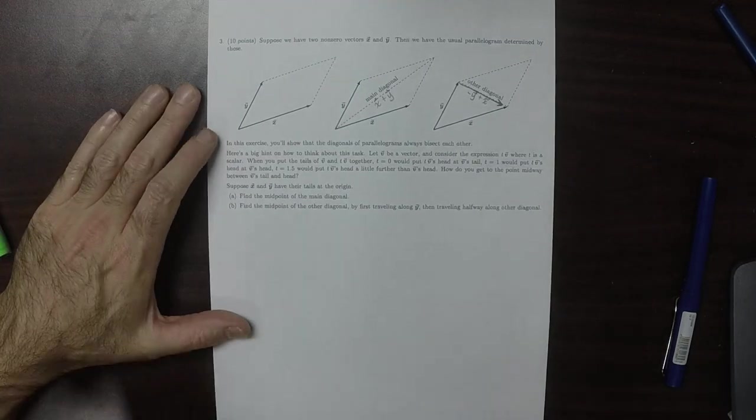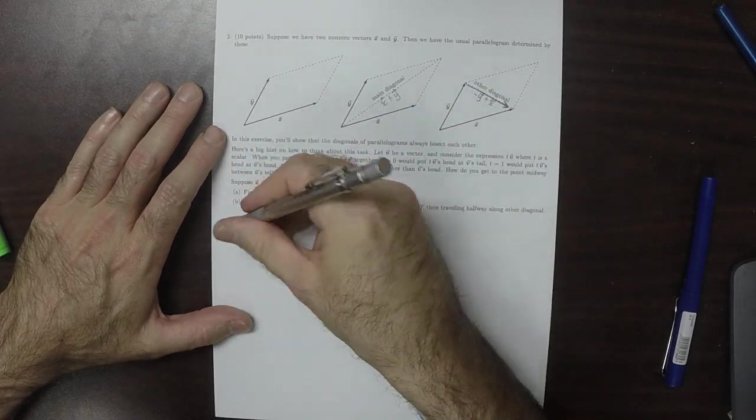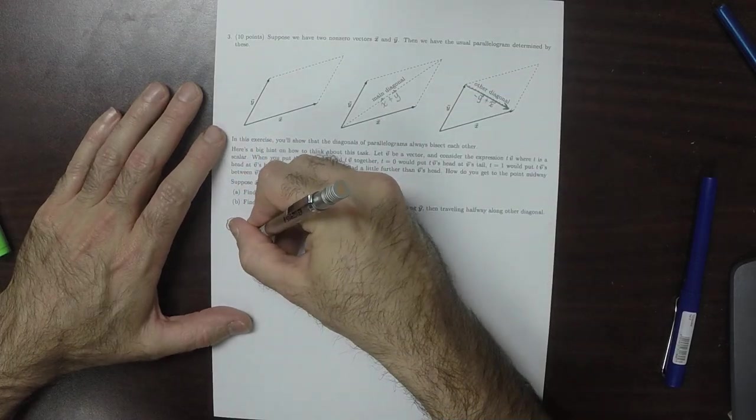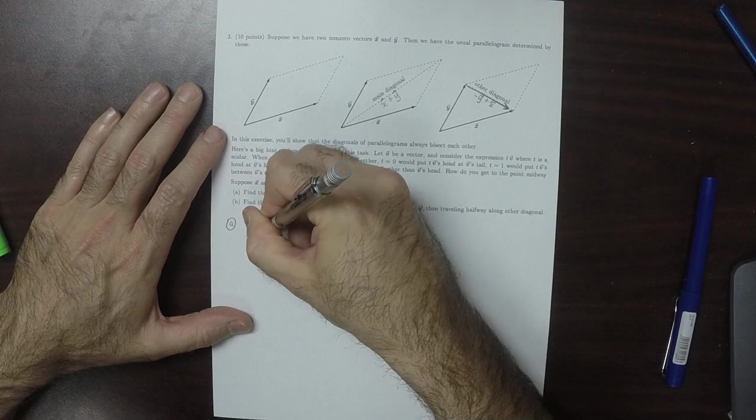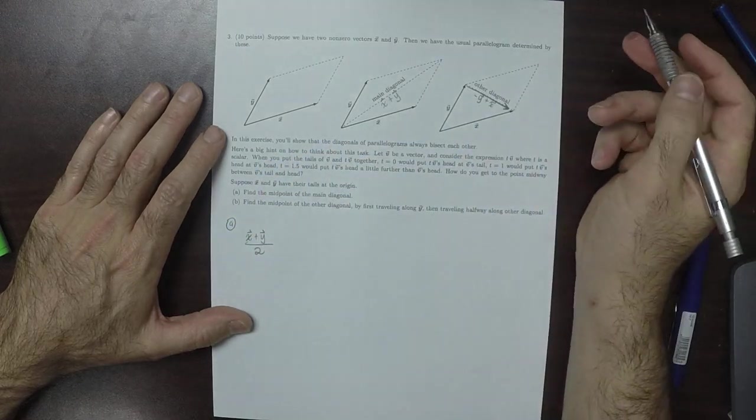Find the midpoint of the main diagonal. So for point A, that's easy enough. That would be x plus y over 2. That's just obvious.